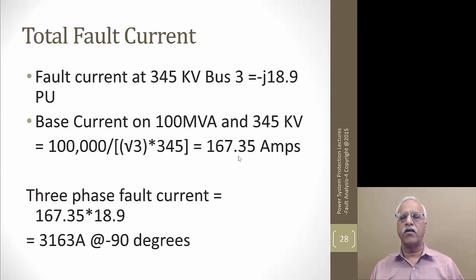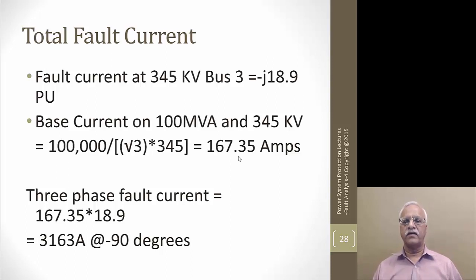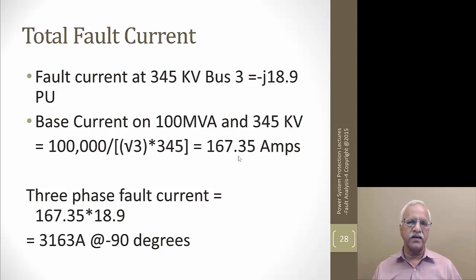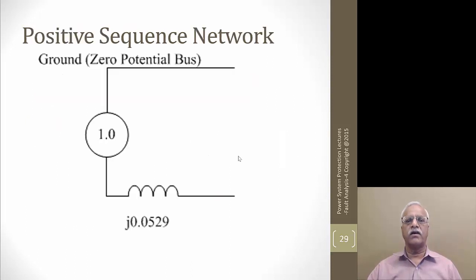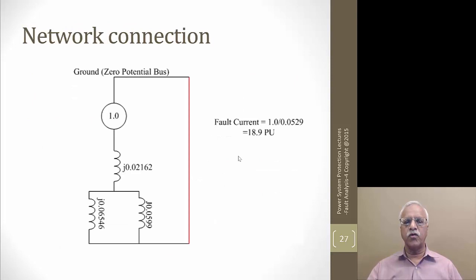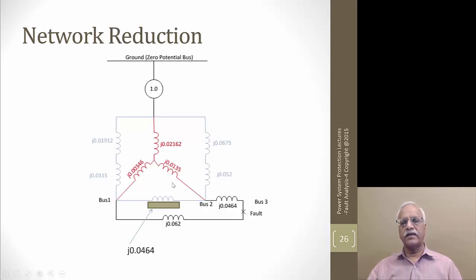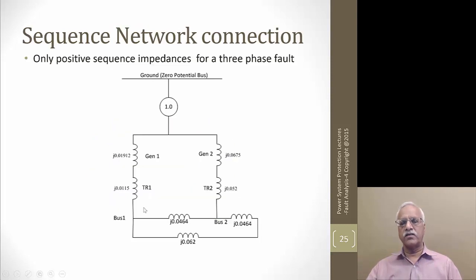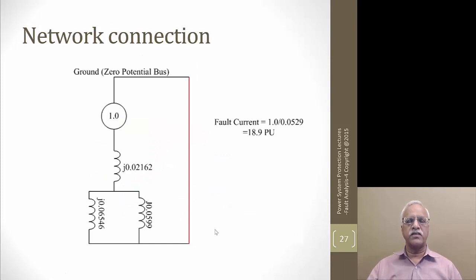The total fault current at 345 kV is -j18.9 per unit. The base current on 100 MVA at 345 kV is 167.35 amperes. So the three-phase fault current is 167.35 × 18.9 = 3163 amps at -90 degrees — lagging the voltage by 90 degrees because we neglected all resistances. To find the individual generator contributions, you use this current, make divisions in the network, then work backwards to calculate how the currents are divided between generator one and generator two, and convert back to phase currents.